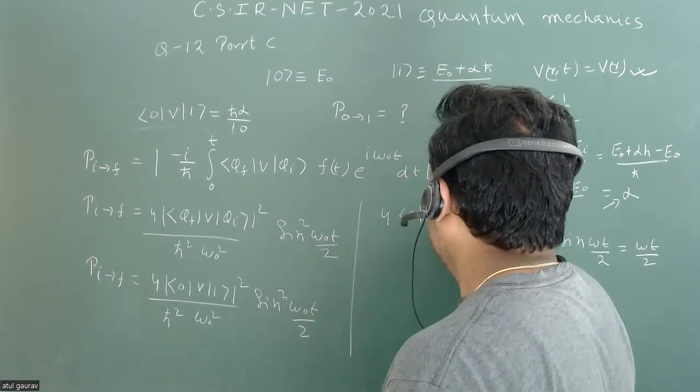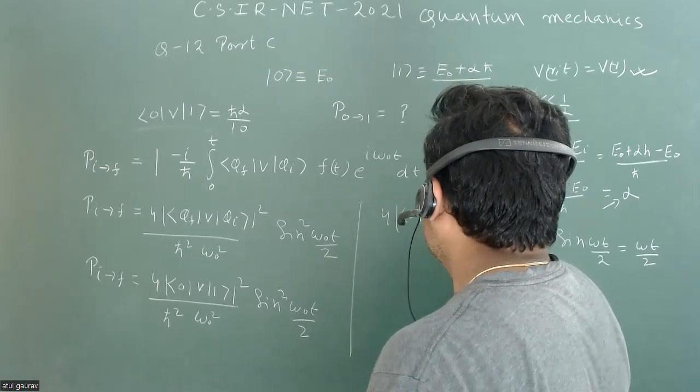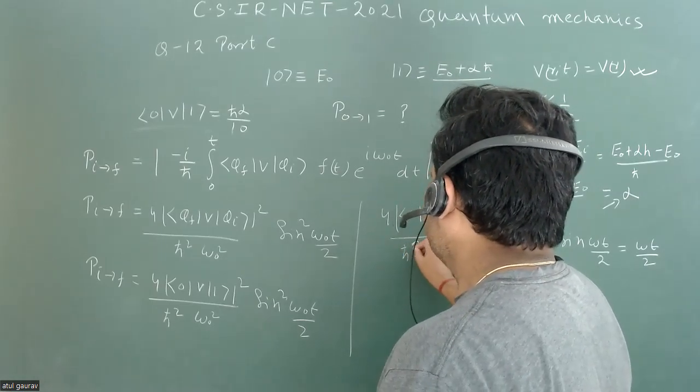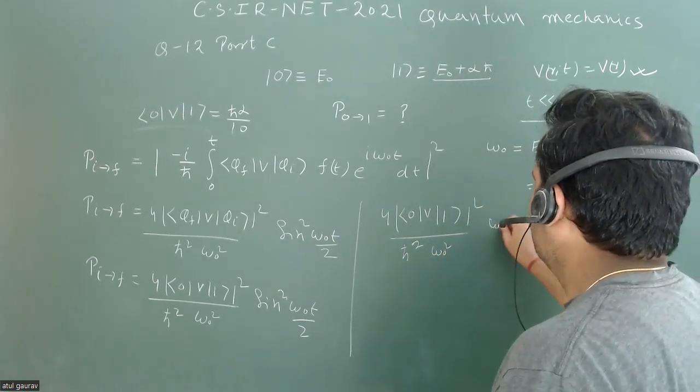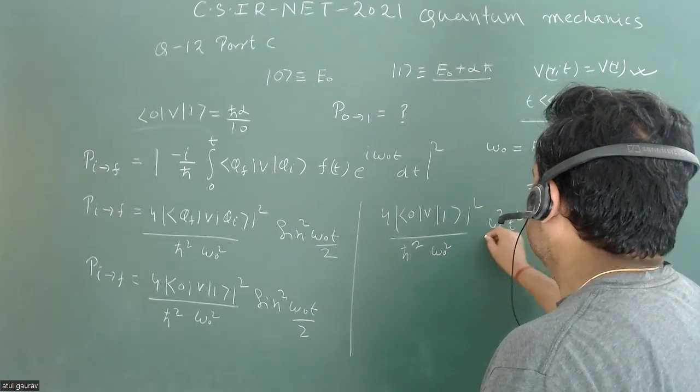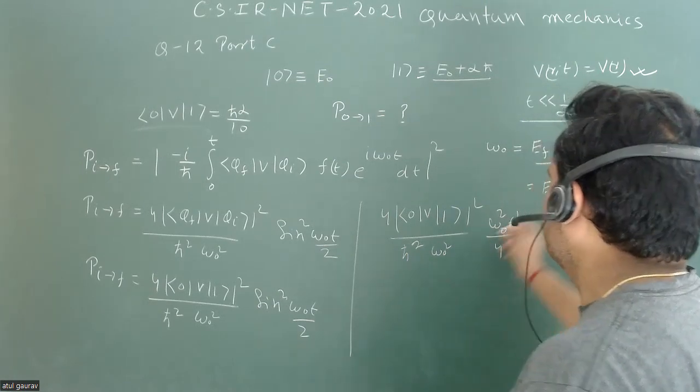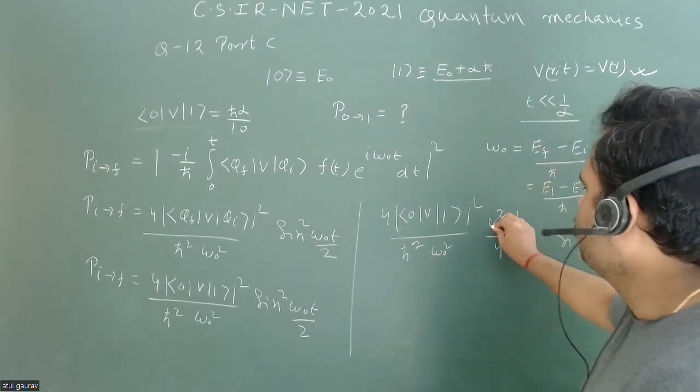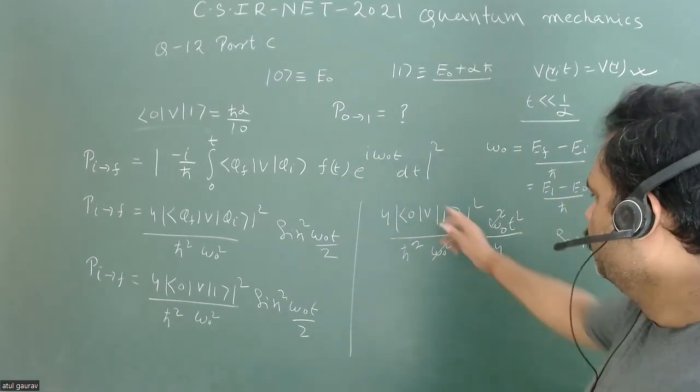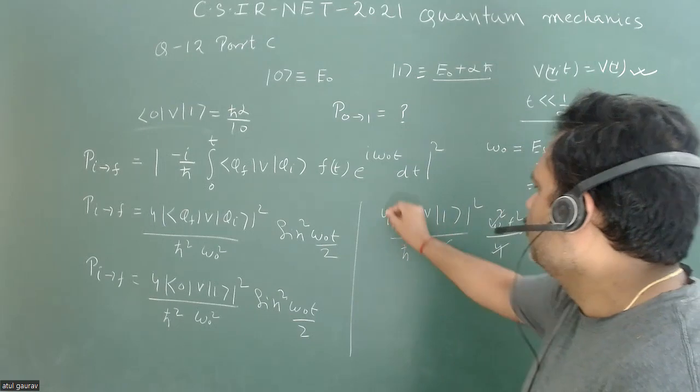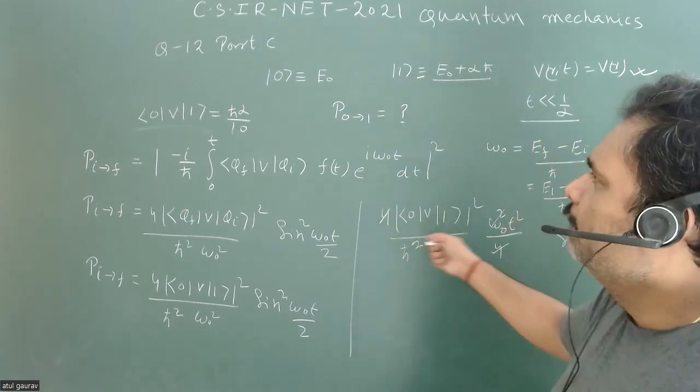This becomes 4|⟨0|V|1⟩|²/(ℏ²ω₀²) times (ω₀t/2)² = (ω₀²t²)/(4ω₀²) times the matrix element squared. So ω₀ in numerator and denominator cancel, and the 4s also cancel.